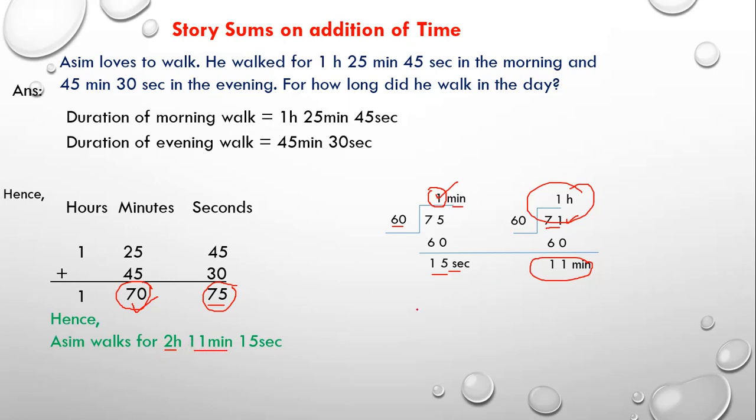So, I wrote here as 11 minutes and 15 seconds. Hence, Asim walks for 2 hours 11 minutes 15 seconds.